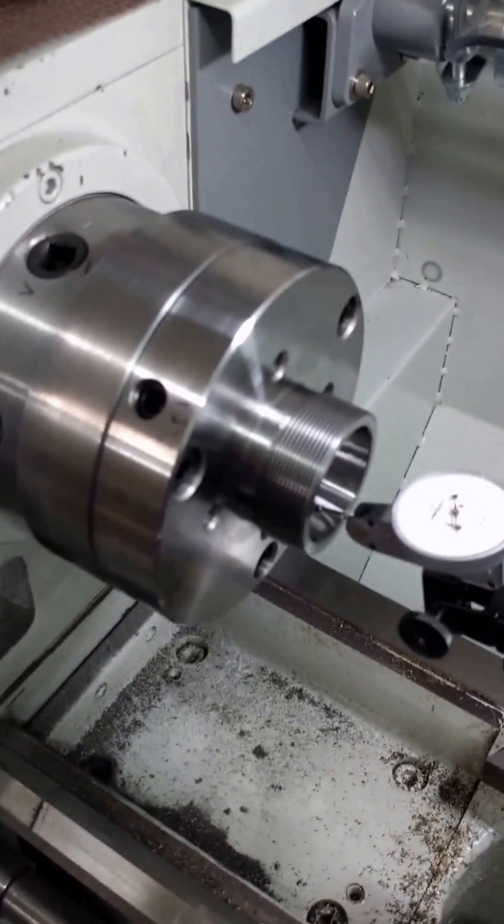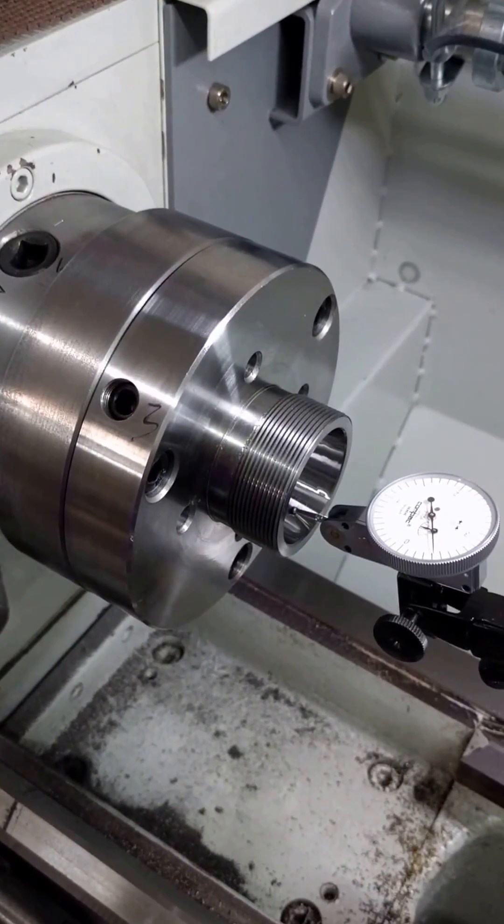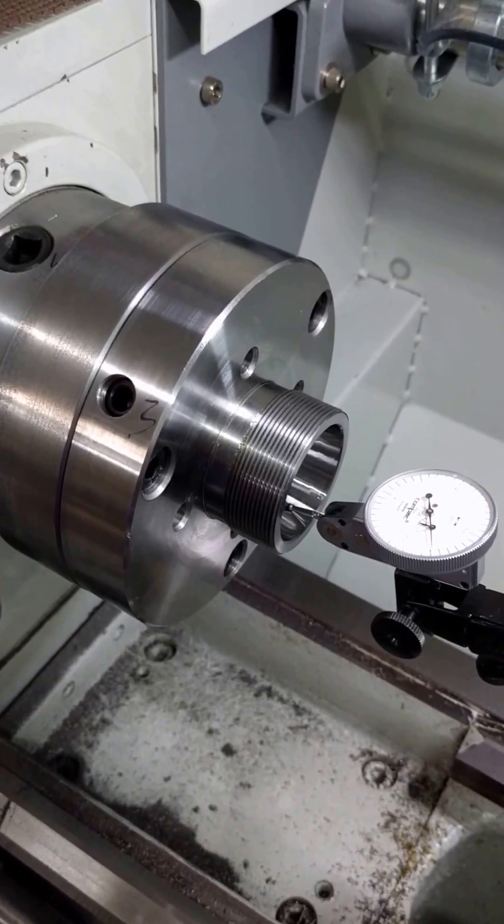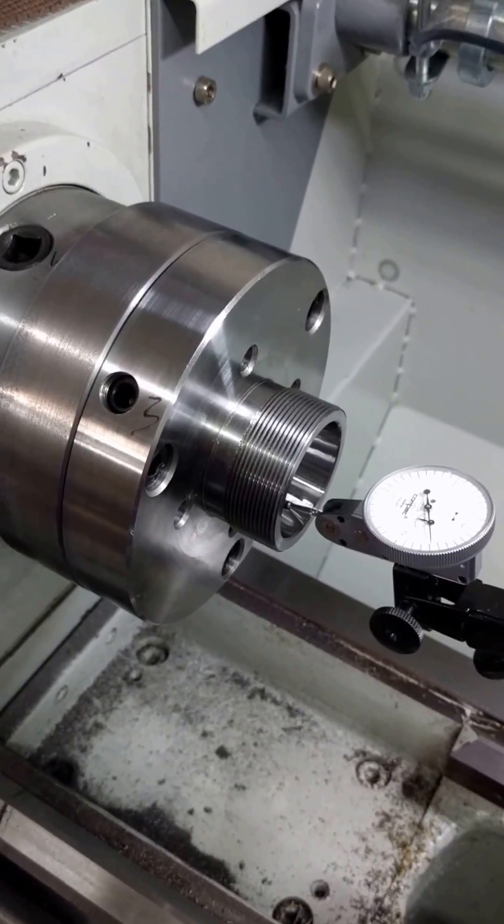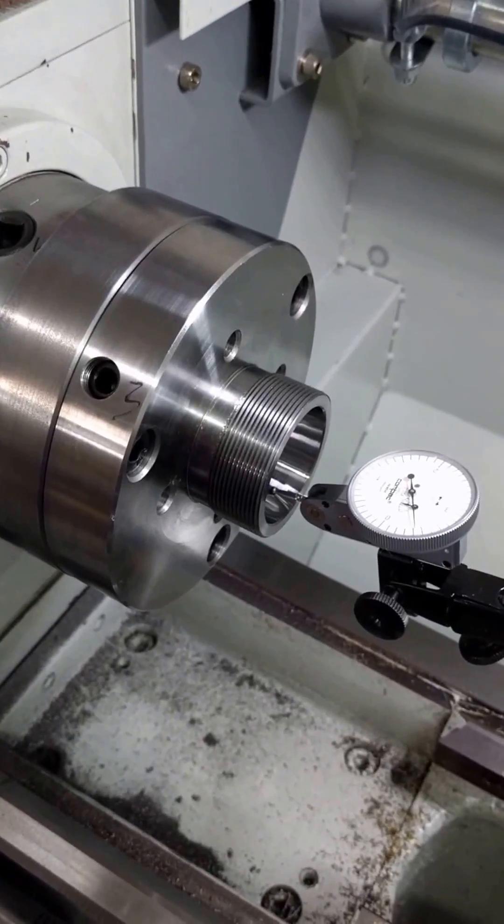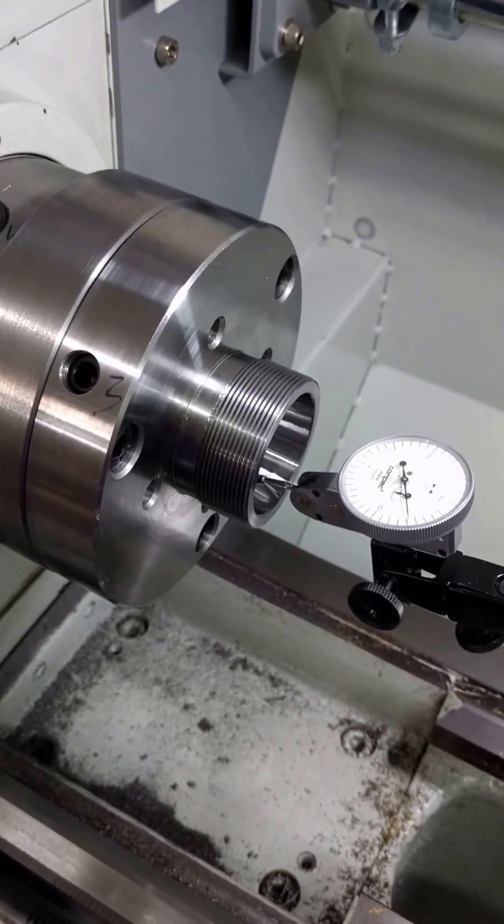I just completed the installation of this Shars ER 40 type chuck for my Precision Matthews 1340 lathe. This chuck has a set true function which turns out quite nice.